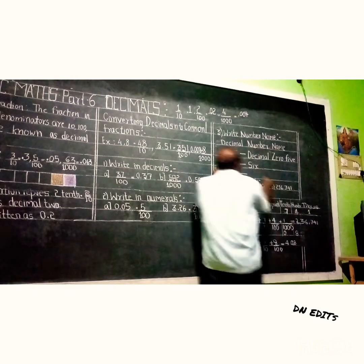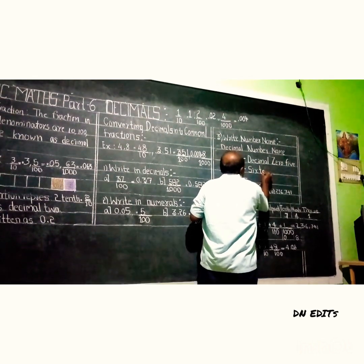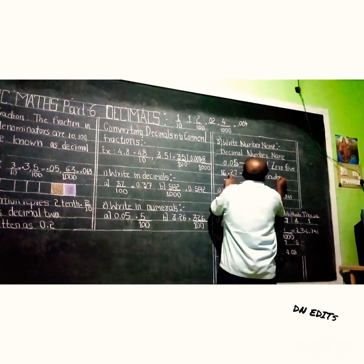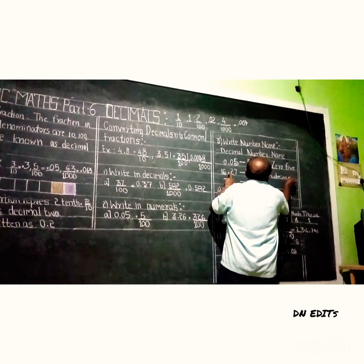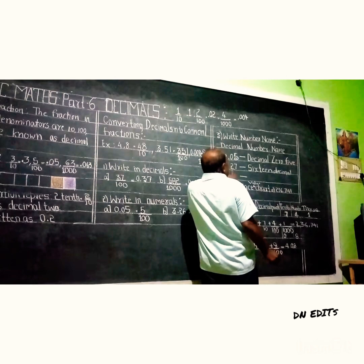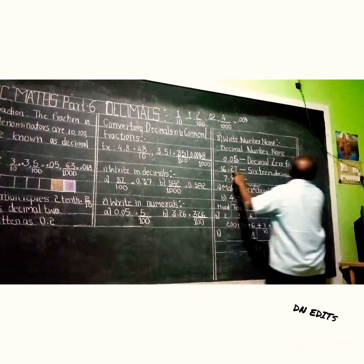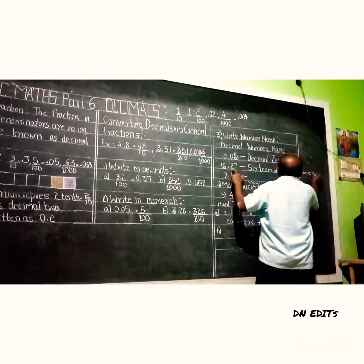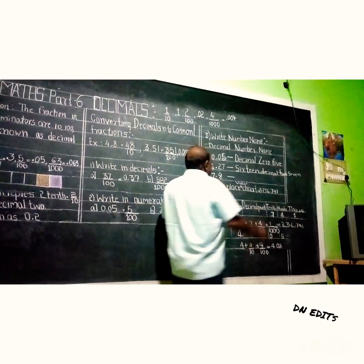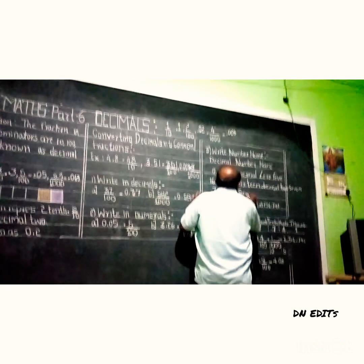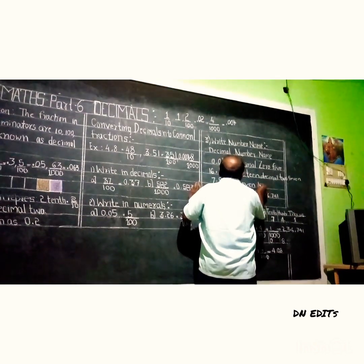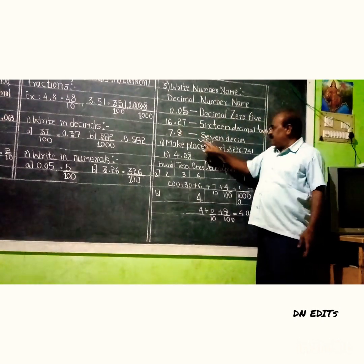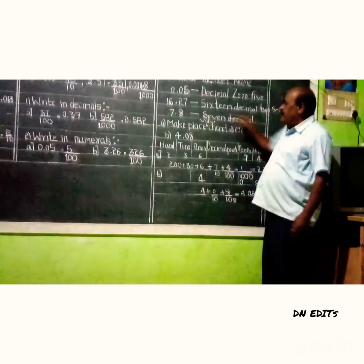16.27 — sixteen decimal, and after the decimal you have two and seven. So you read it as sixteen decimal two seven. Next, 7.87 — seven decimal. After the decimal, eight seven. So it is seven decimal eight seven.